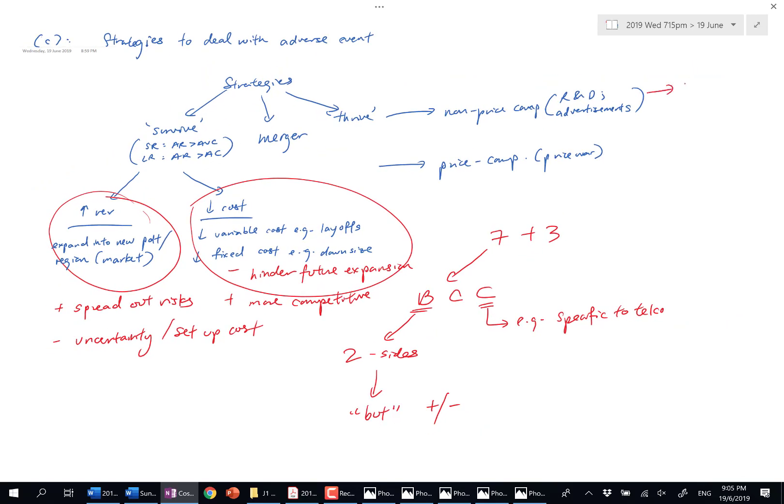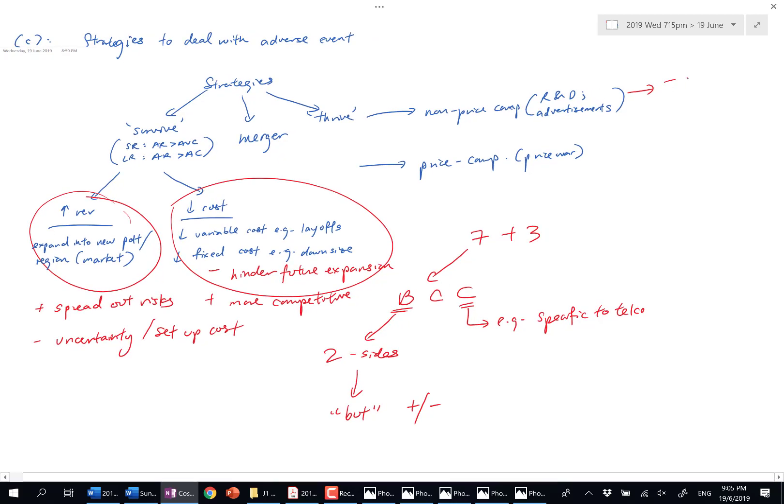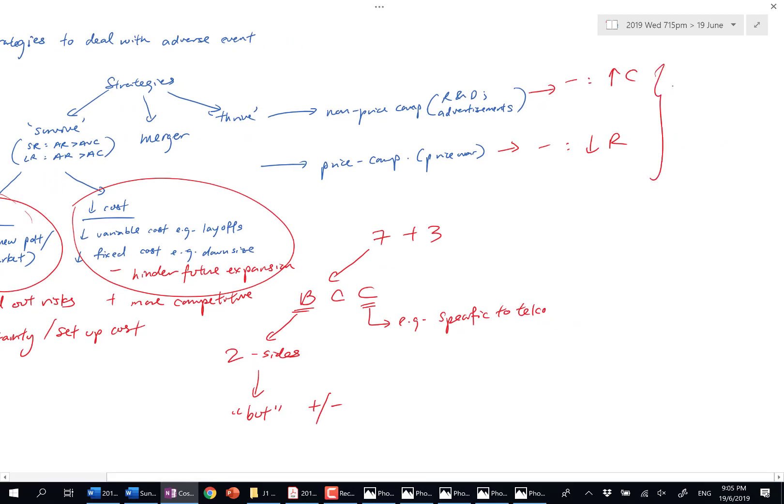Non-price, the downside is higher cost. Price downside: lower revenue. But the benefit is that in the long run, when rivals have been chased out, market share goes up, therefore revenue earned also goes up.